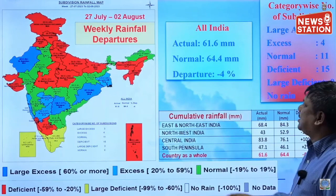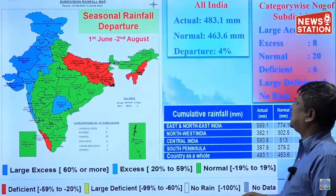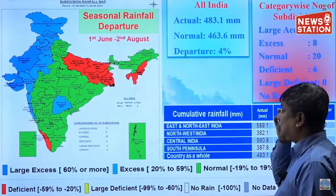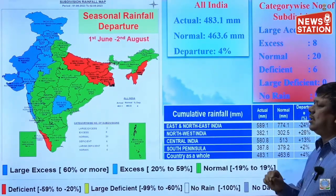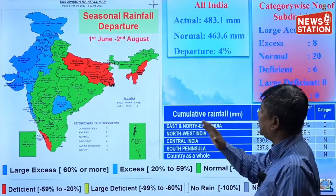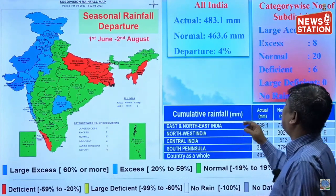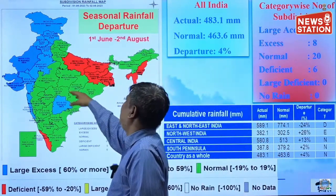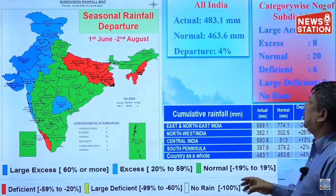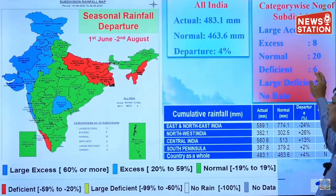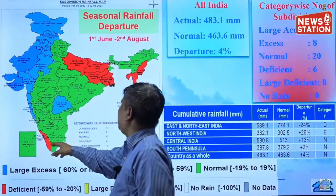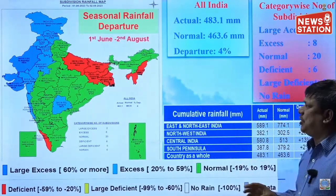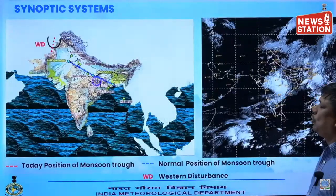The seasonal departure scenario shows plus 4 percent all-India. Last week it was plus 5 percent; now it is plus 4 percent. Most subdivisions are large excess, excess, or normal. Only 6 subdivisions are deficient: Kerala, Uttar Pradesh, Bihar, Jharkhand, Gangetic West Bengal, and NMMT.